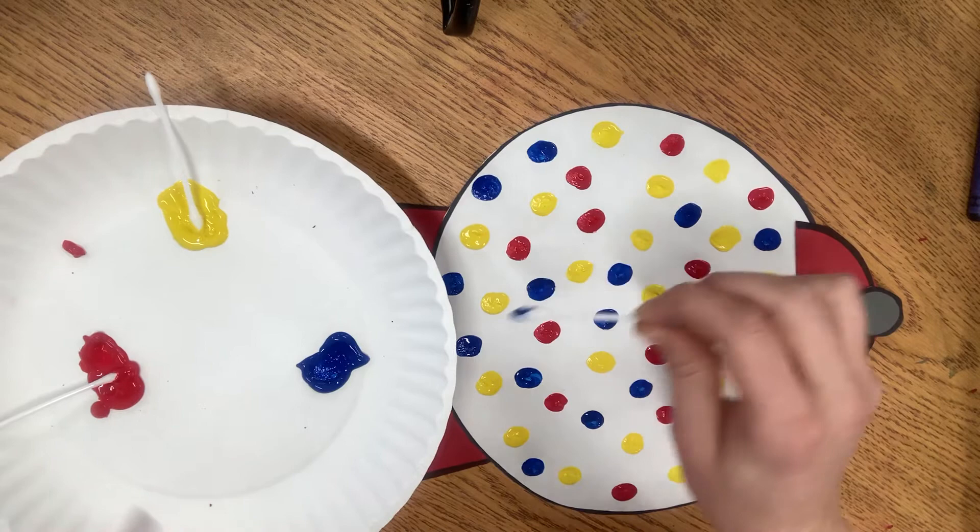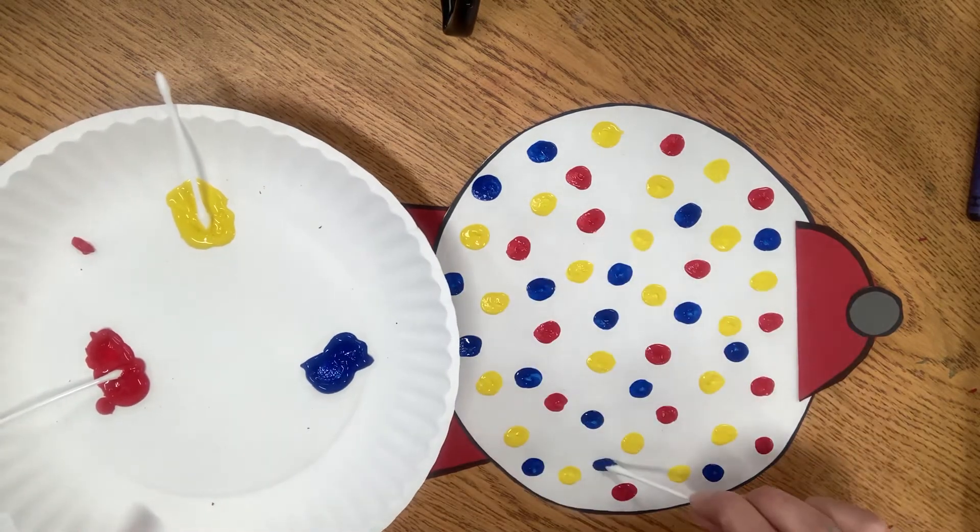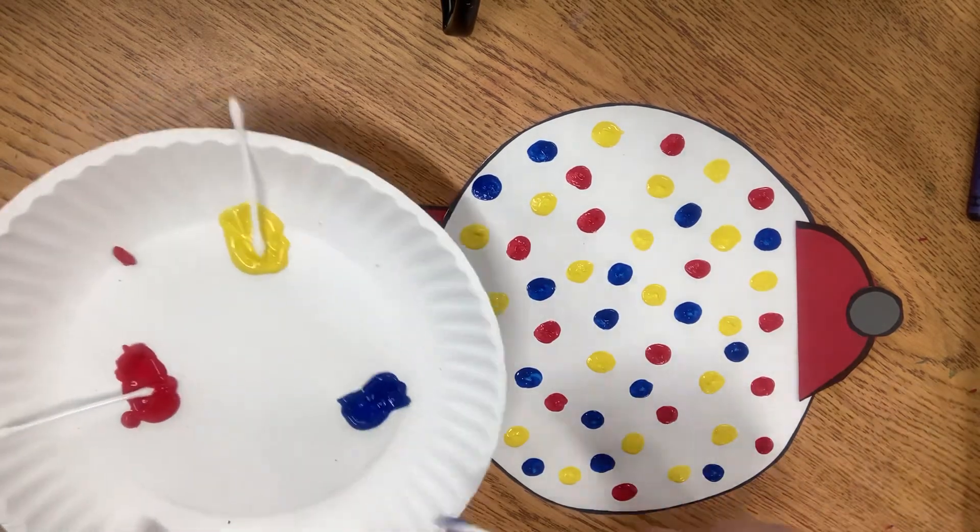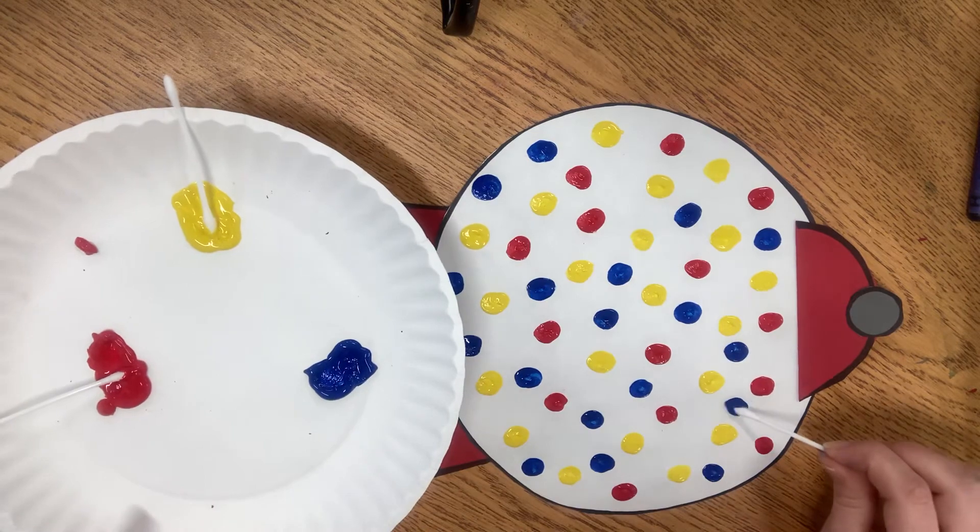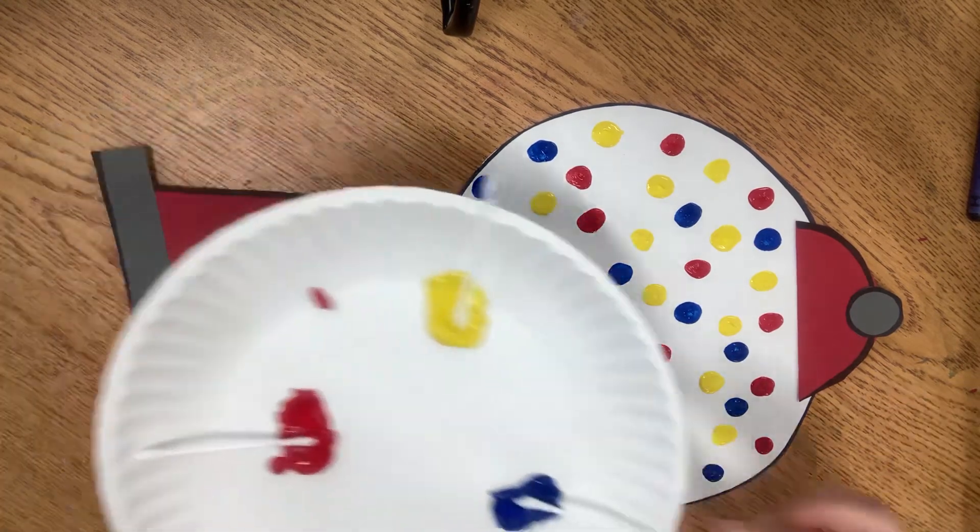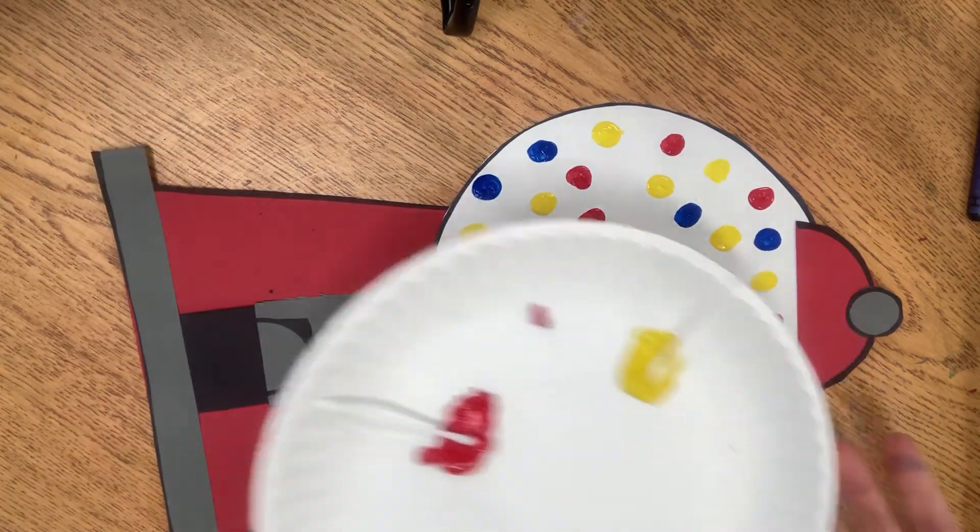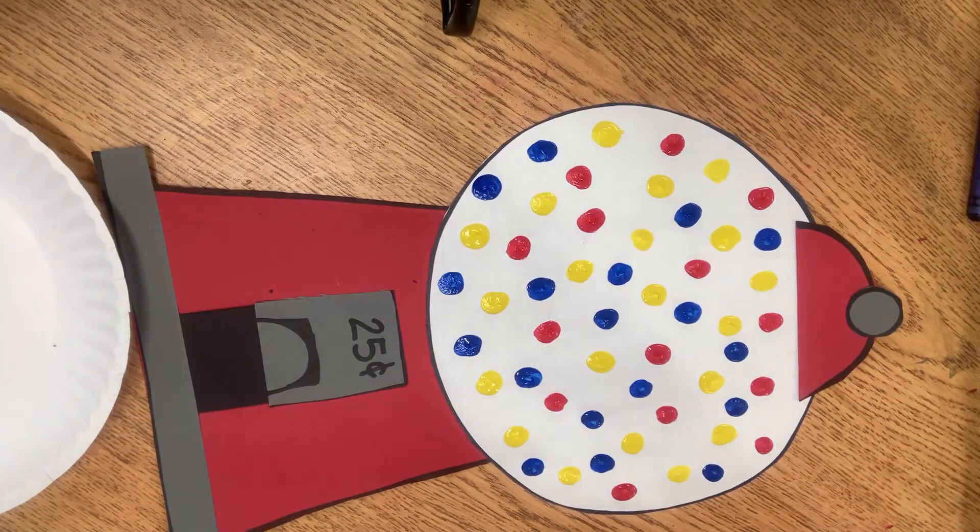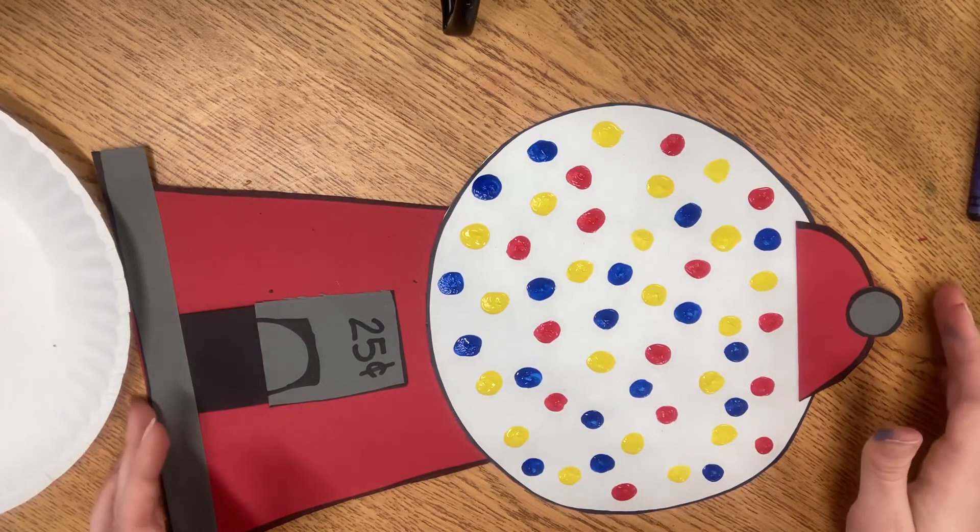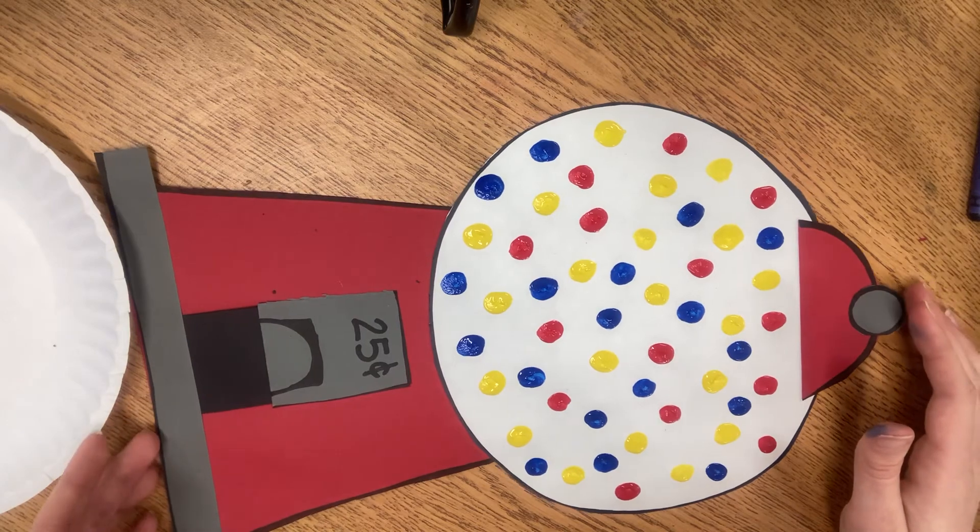Sometimes it can take a couple hours. If you didn't use a lot of paint, sometimes it takes just a few minutes. But I always like to let it dry overnight. So when you're all done, we don't need any of this paint anymore. We can get rid of it, or you could do a free paint and just do a painting with all your colors. And if we have time today, we'll do that too.